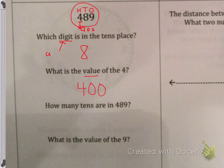Remember, a digit is any number from zero to nine. So the digit was the eight in the tens place, but the value was eighty. The value of the four is four hundred.